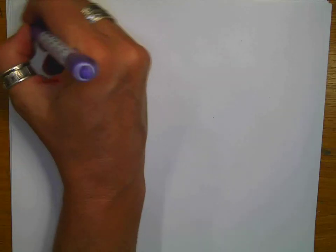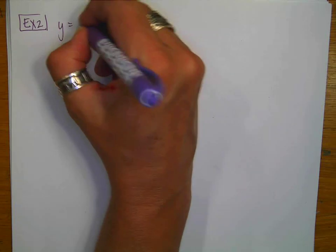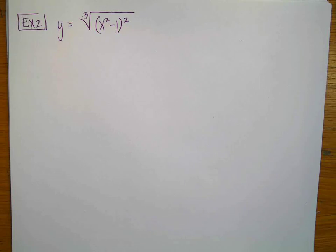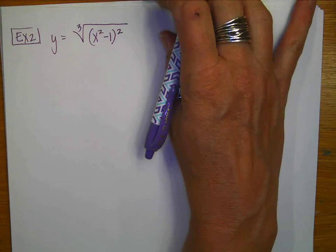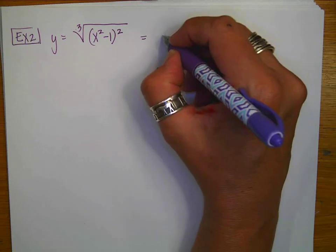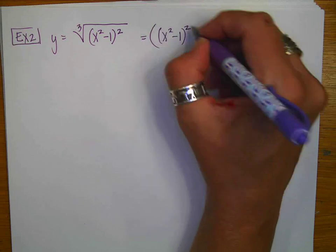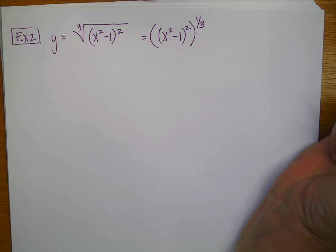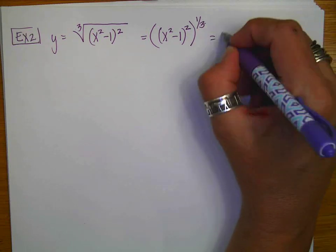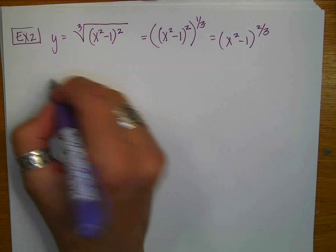Example 2: y equals the cube root of x squared minus 1 squared. I'm going to rewrite this as x squared minus 1 squared raised to the one-third power. Remember, a power to a power is multiplied, so this becomes x squared minus 1 to the two-thirds power. Now it's just one chain.